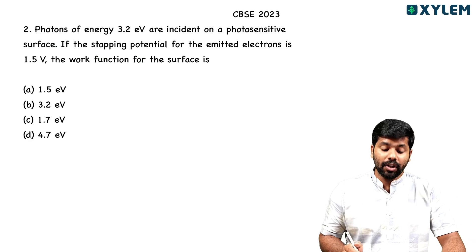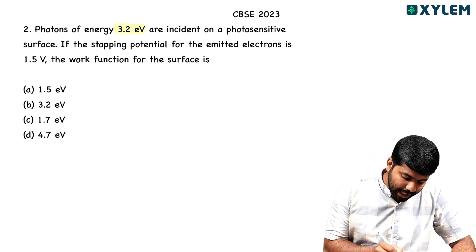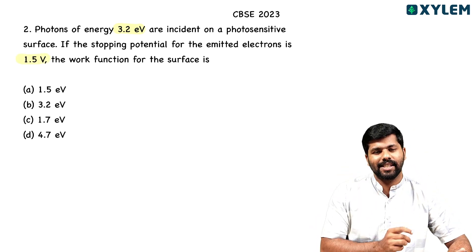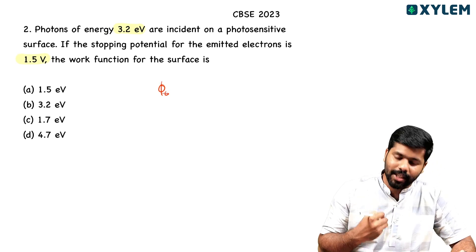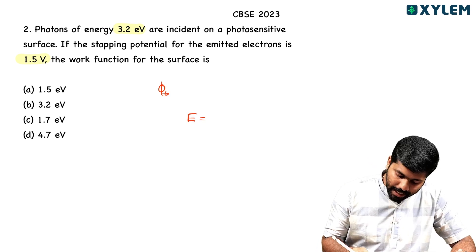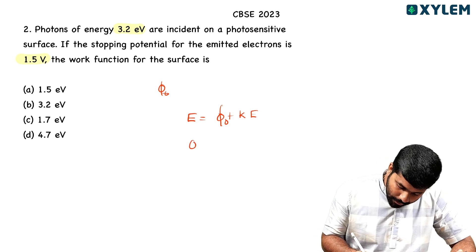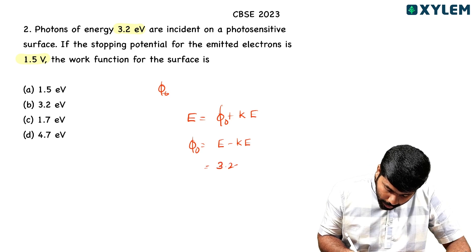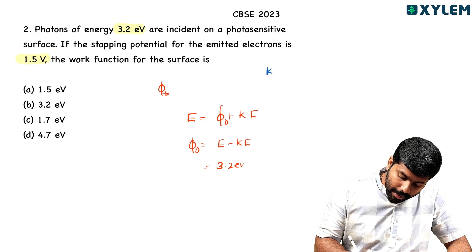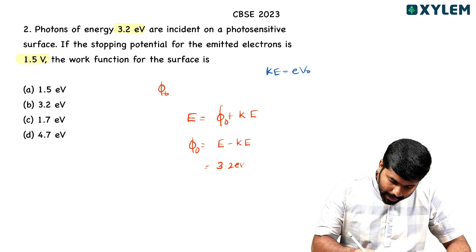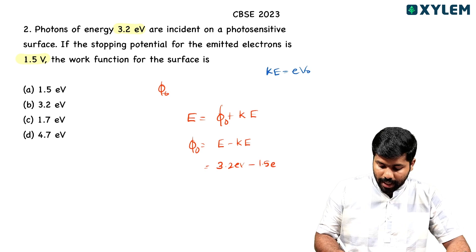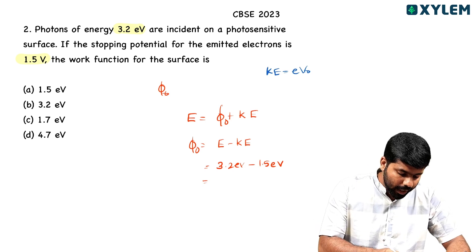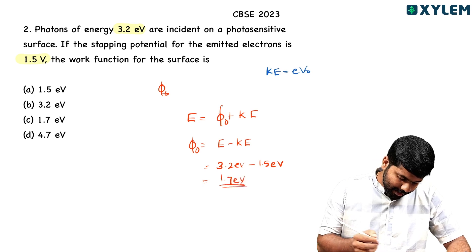A photon of energy 3.2 electron volt is incident on a photosensitive surface. If the stopping potential for the emitted electron is 1.5 volt, what is the work function for the surface? Using Einstein's photoelectric equation: energy equals phi-zero plus kinetic energy. So phi-zero equals E minus KE. Photon energy is 3.2 eV; kinetic energy equals eV₀ = 1.5 eV. Therefore phi-zero equals 3.2 minus 1.5 equals 1.7 electron volt. Correct option C.